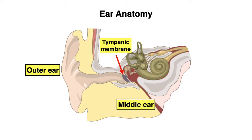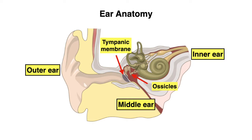We then reach our middle ear, which consists of our three ossicles: your malleus, your incus, and your stapes. I like to remember this as MIS, or M-I-S. These three ossicles are what send movement of the tympanic membrane to the inner ear, which is our third and final component of ear anatomy.